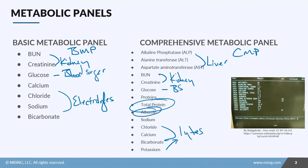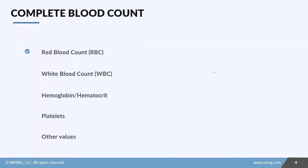Remember that the Comprehensive Metabolic Panel is more complex, so it takes longer to get results back. If you need a quick response on kidney function, blood sugar, and electrolytes, request a Basic Metabolic Panel — it gives that information quickly. If you need something more in-depth, the CMP is the better choice, just keep in mind it will take longer.